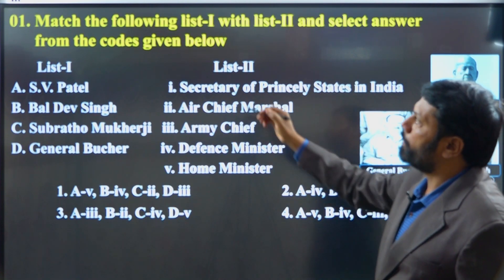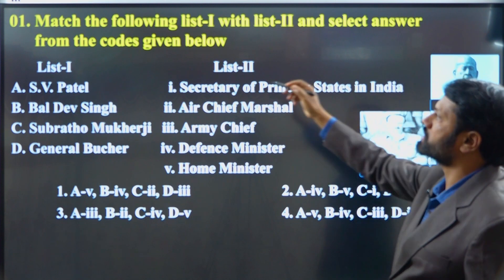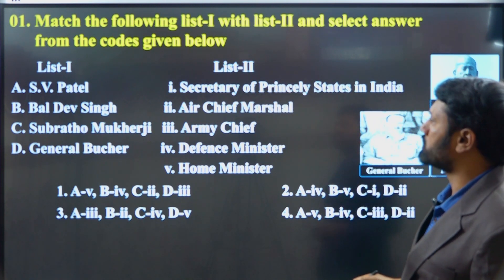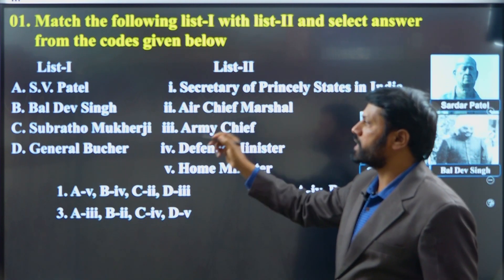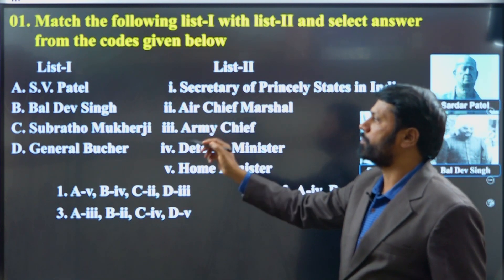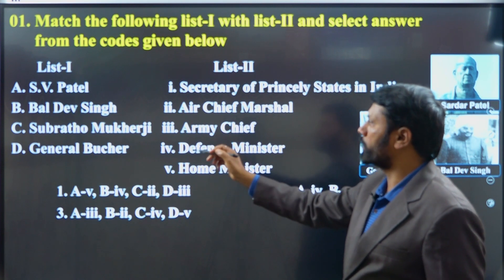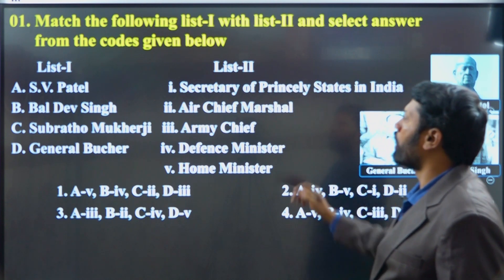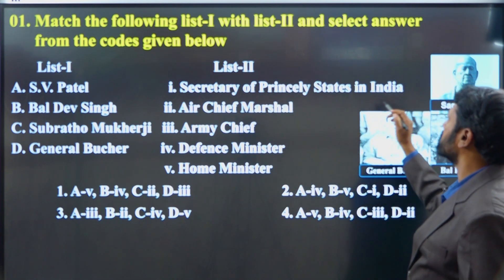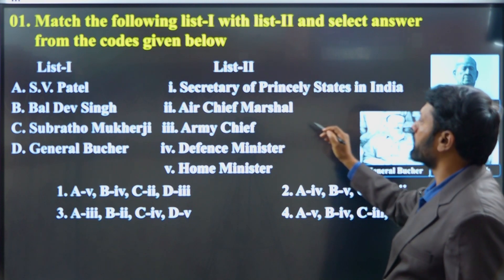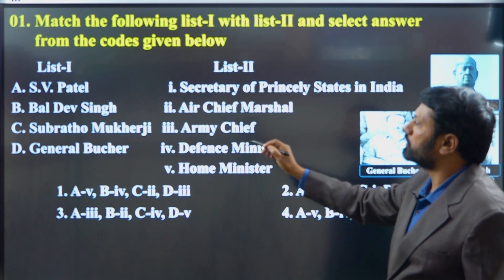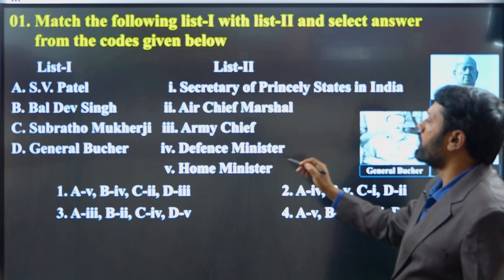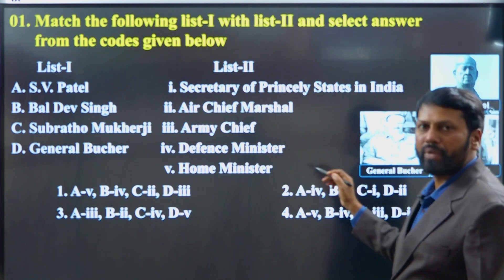Question number one: Match the following List One with List Two. List One contains: A. S.V. Patel, B. Baldev Singh, C. Subrato Mukherjee, D. General Butcher. List Two contains: 1. Secretary of Prince States in India, 2. Air Chief Marshal, 3. Army Chief, 4. Defense Minister, 5. Home Minister.